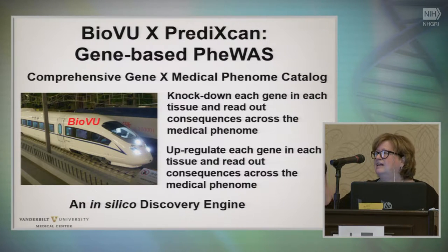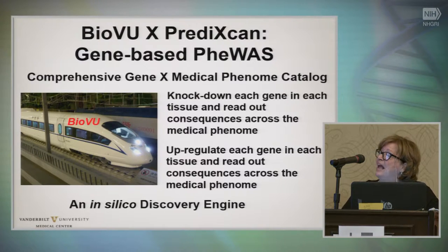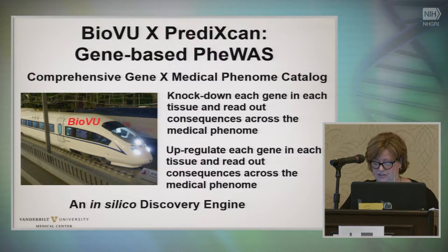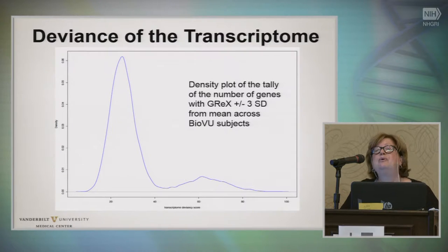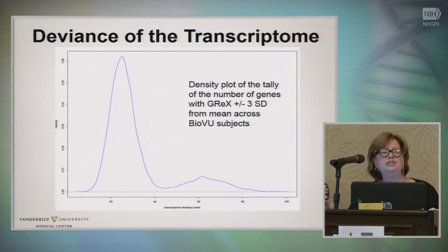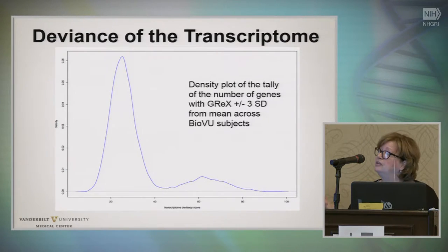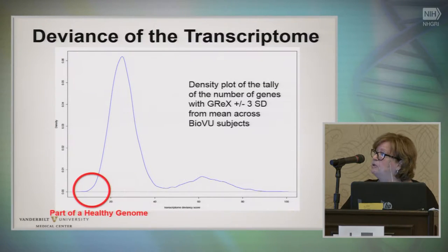But it's natural variation that we're using. Rather than manipulating the human organism, we're using natural variation that leads us to express bell-shaped curves of not just measured gene expression, but genetically predicted gene expression also. And this makes BioVU a really great in silico discovery engine. If you count up the number of genes where each person is at least three standard deviations from the mean in either direction, that metric is actually relevant to what Howard asked before — what's a healthy genome?